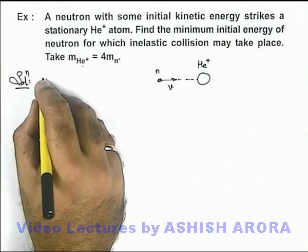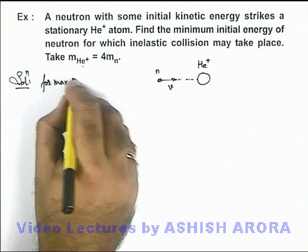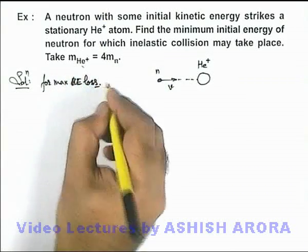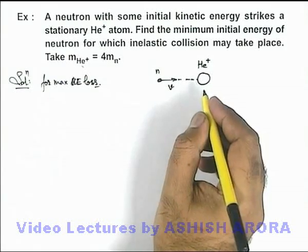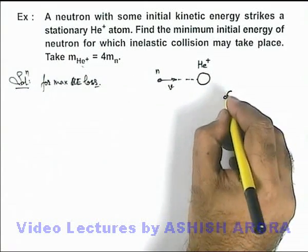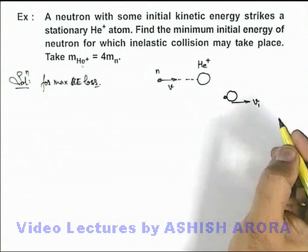We know that for maximum kinetic energy loss, a perfectly inelastic collision should take place in which after collision the two particles, the helium and neutron, will move together. Say these will move with a speed v1.